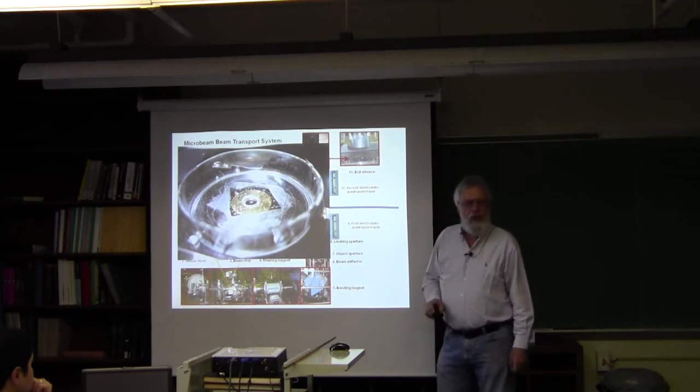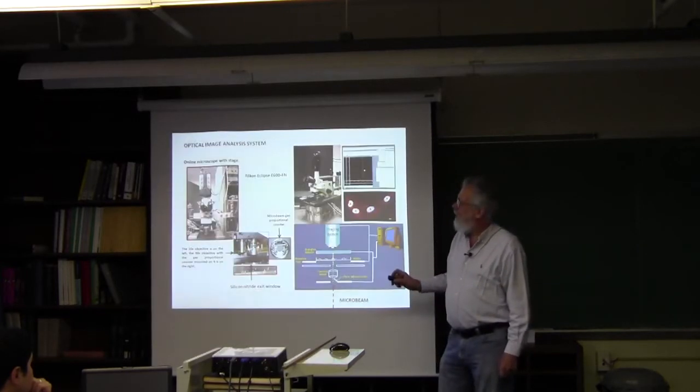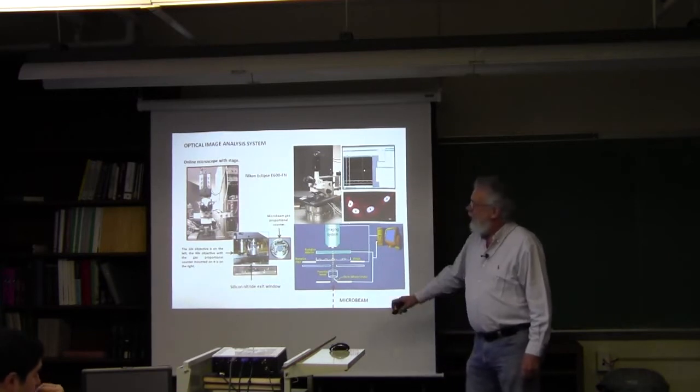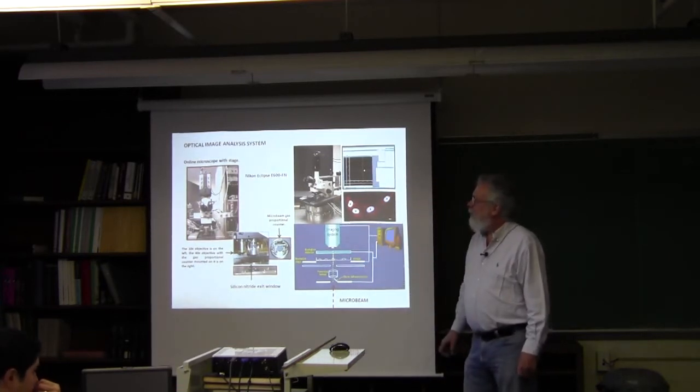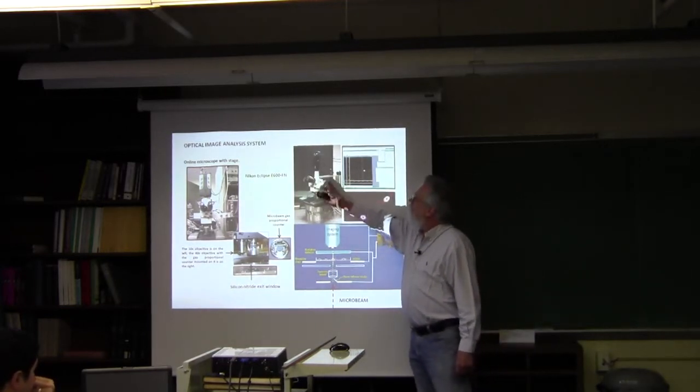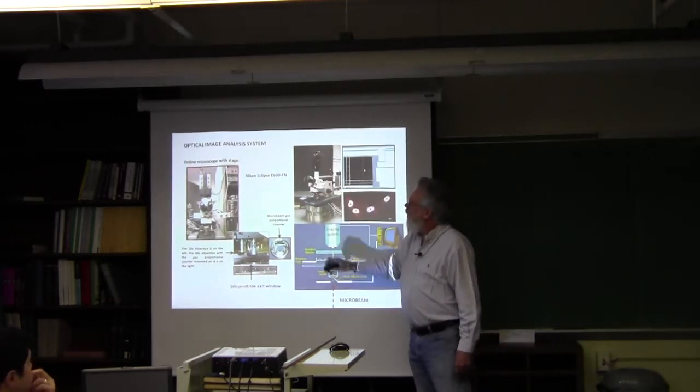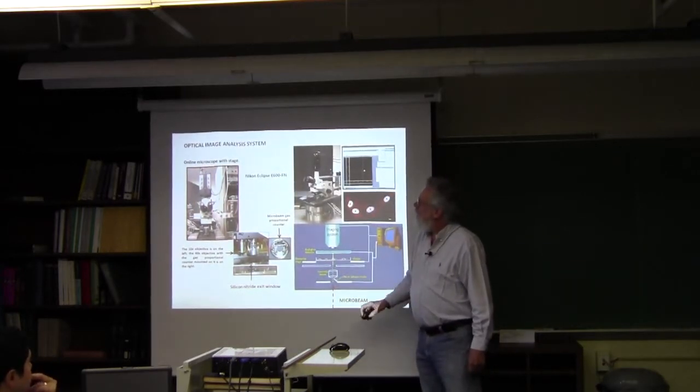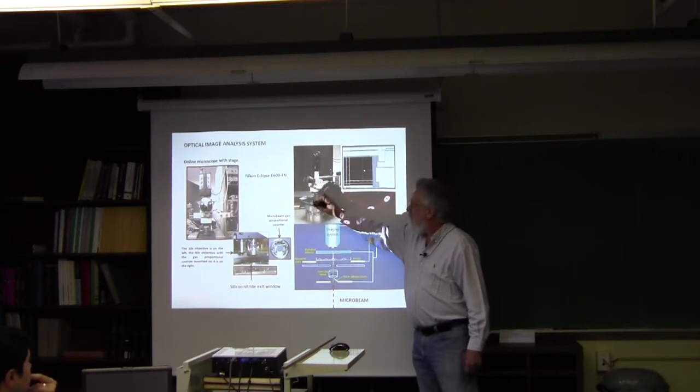On top is the Nikon eclipse microscope which is used for imaging. Camera on top, multi-photon laser comes in from here, regular illumination comes in from the back, and the objectives.